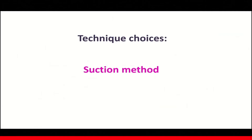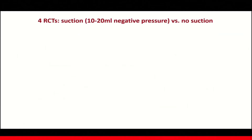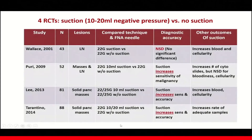Moving on to suction method: 4 RCTs have been performed to compare suction versus no suction using 22 and 25 gauge FNA needles. 3 out of 4 studies show that suction increases the sensitivity and the diagnostic accuracy. However, it also increases blood contamination in some studies.